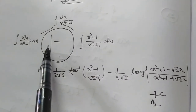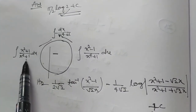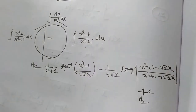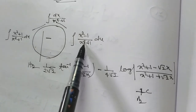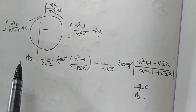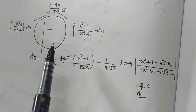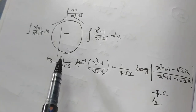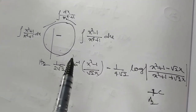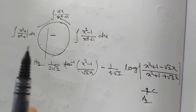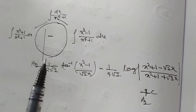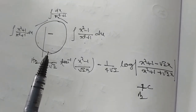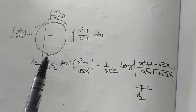Ek aur sawal hai: dx / (x^4 + 1). Neeche quadratic, upar quadratic. (x^2 + 1)/(x^4 + 1) dx aur (x^2 - 1)/(x^4 + 1) dx — dono ko combine karo to result aata hai. Is sawal ko baar baar banwao taaki bachche kam effort se accha number la sakein. Next video mein: root(10x) / (root(10x) + root(10-x)) type ke group ke sawal bhi baar baar aate hain. In sabhi sawaalon ki charcha kijiye. Main ab doosre video mein doosre topic par charcha karunga. Thank you very much.